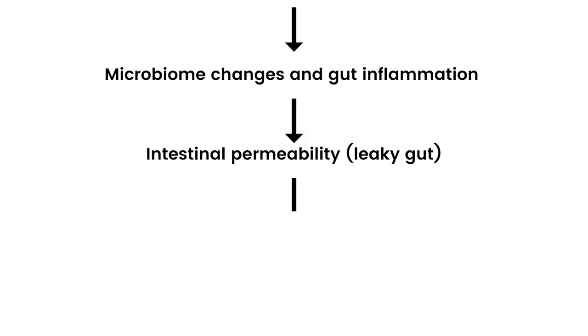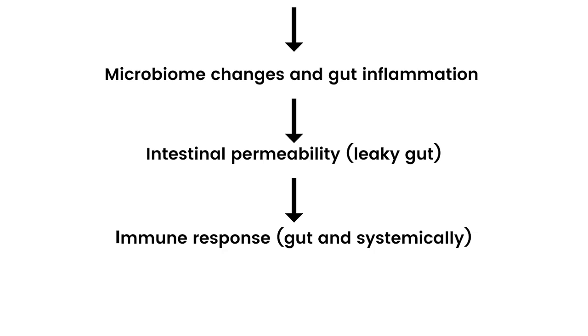When we have intestinal permeability, the gut is leaky and allows more things in — microbes, pathogens, their byproducts, undigested food, and chemicals from our food, air, or water supply. That creates an inflammatory immune response in the gut. The immune cells start fighting them, and then the gut immune response becomes a systemic inflammatory immune response.